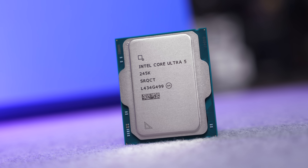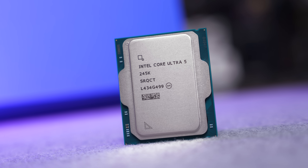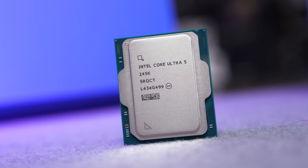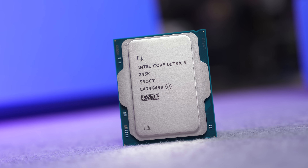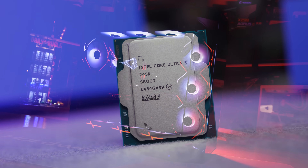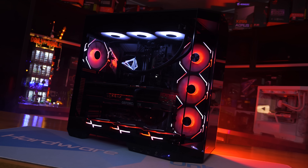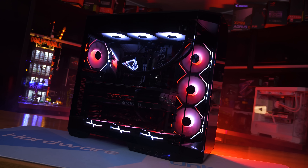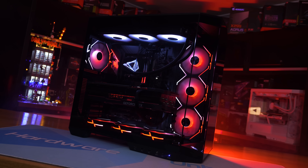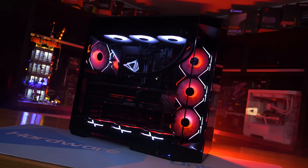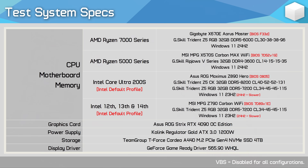The K SKU processors have an unlocked clock multiplier and can therefore be overclocked. For testing, multiple different test systems were used — you're welcome to hit the pause button to take a closer look at the hardware. Let's get into the data.